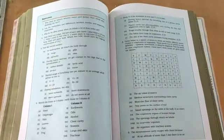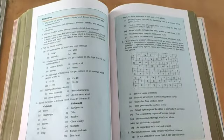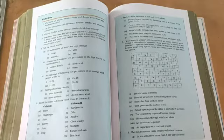And now move on to the exercise portion. So first question is, why does an athlete breathe fast and deeper than usual after finishing the race? Next question is, list the similarity difference between aerobic and anaerobic respiration. Why do we often sneeze when you inhale a lot of dust laden air? So there are different questions.